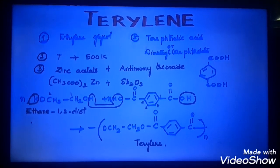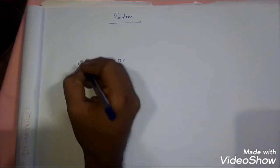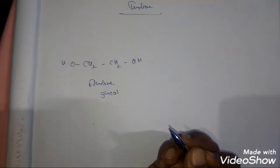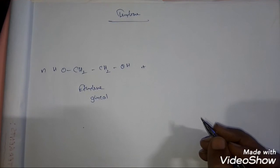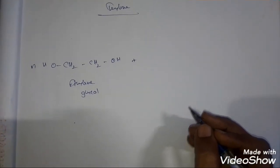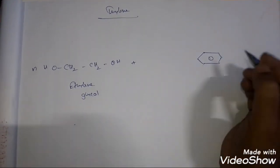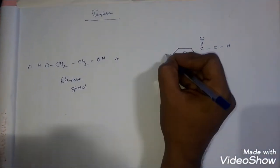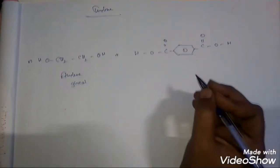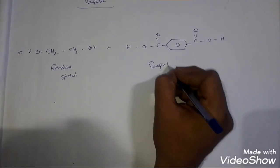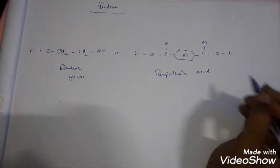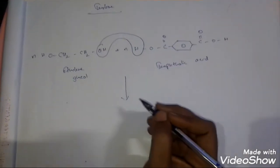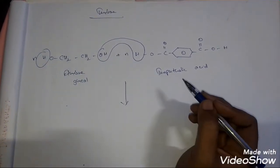Let us write this reaction one more time. Ethylene glycol is CH₂–CH₂ with OH on both ends, taken for N number of times. Along with that we take N number of terephthalic acid — a benzene ring with an acid group (COOH) at one end and another acid group at the other end, written as T-E-R-E-P-H-T-H-A-L-I-C acid. So this OH combines with this H, and similarly this H combines with this OH.